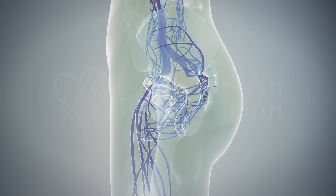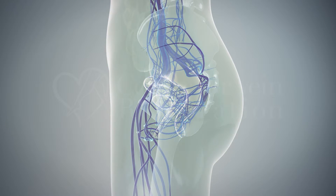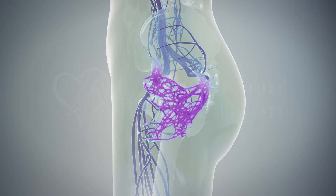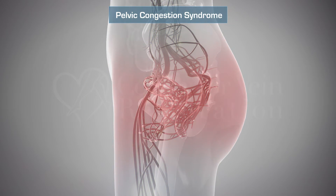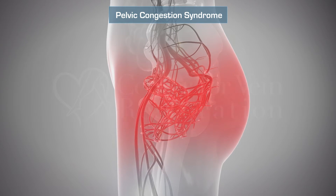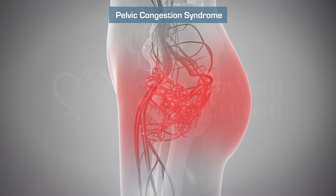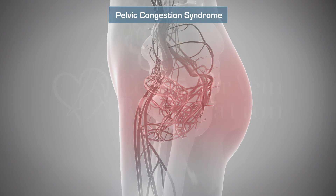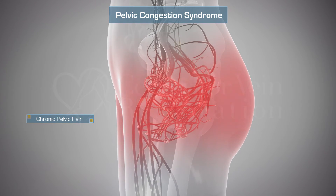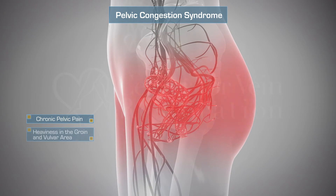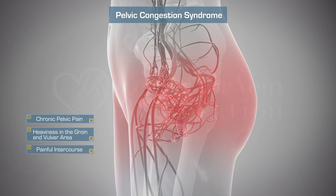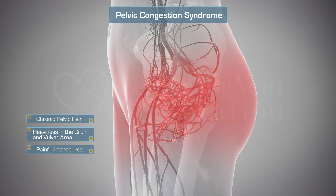If the venous hypertension stays contained within the pelvis, that leads to pelvic congestion syndrome. These devastating symptoms of pelvic congestion include chronic pelvic pain lasting for more than six months, heaviness in the groin and vulvar areas, and painful intercourse.